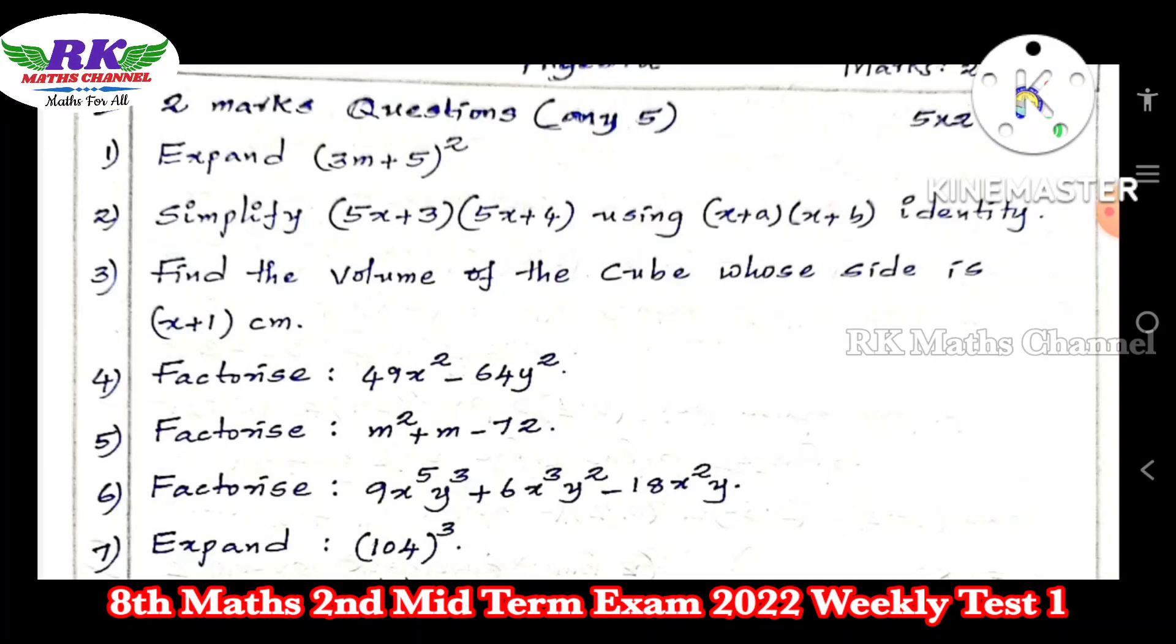Simplify (5x + 3)(5x + 4) using the identity. Use x + a into x + b identity. The formula is x² + (a + b)x + ab.